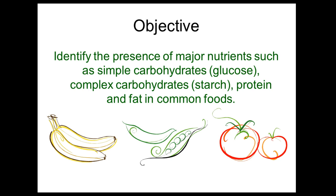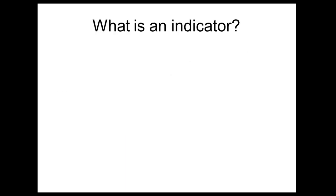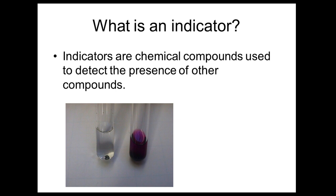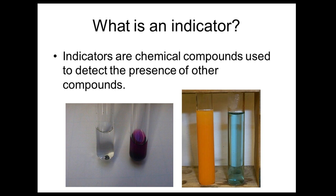The objective is to identify the presence of major nutrients such as simple carbohydrates or monosaccharides or glucose, compared to complex carbohydrates or starch or polysaccharides, and then proteins and fats in common foods. Indicators are chemical compounds used to check the presence of other compounds, and we're going to use them to find compounds present in foods.